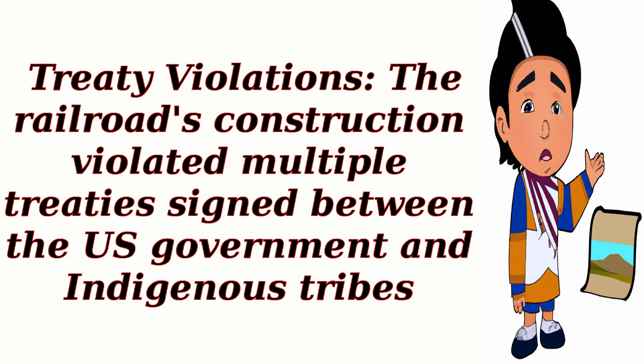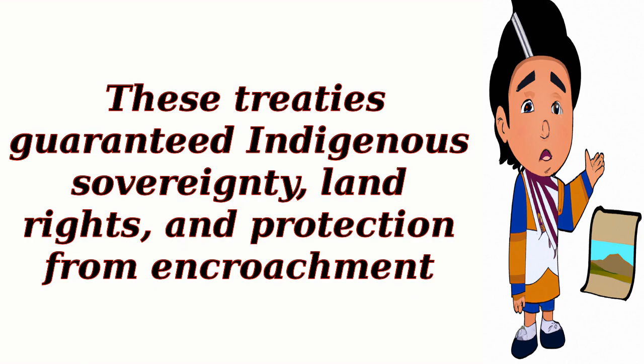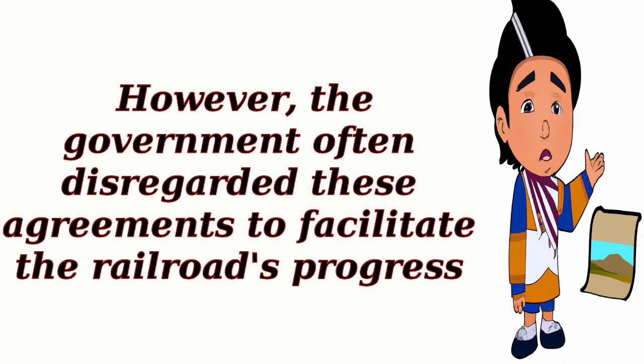Treaty Violations: The railroad's construction violated multiple treaties signed between the U.S. government and indigenous tribes. These treaties guaranteed indigenous sovereignty, land rights, and protection from encroachment. However, the government often disregarded these agreements to facilitate the railroad's progress.